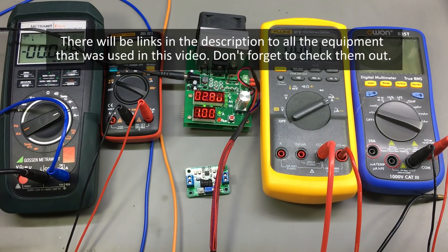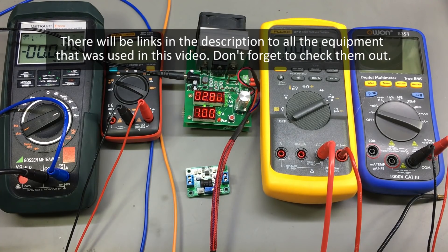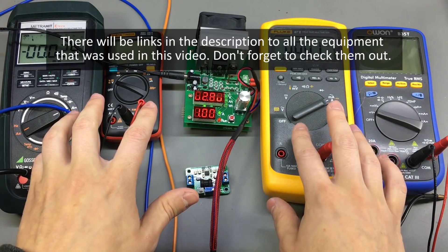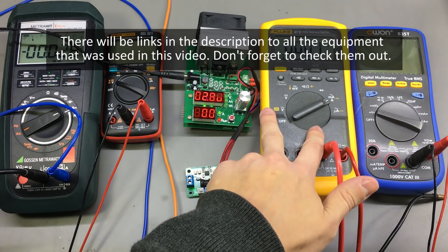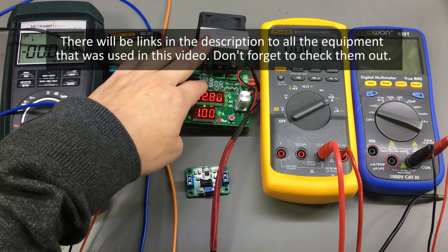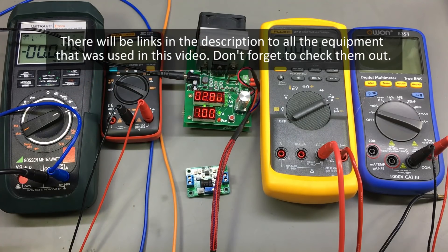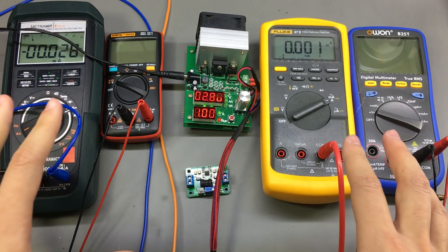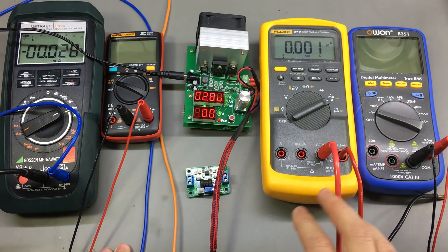But your results will be dependent on the accuracy of the instruments you use. In my case, I'm going to use a bench power supply to supply the module with 5 volts, and for the actual measurements, I'm going to use 4 multimeters. Two of them will be measuring on the input and two of them will be measuring on the output, both voltage and current. And to have a variable load on the output, I'm going to use this 60W electronic load. I'll record the values manually in a table.